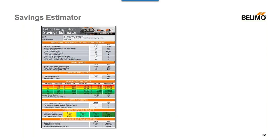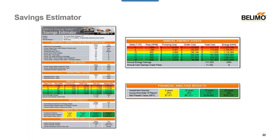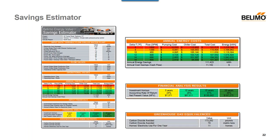One of the additional tools we offer with the energy valve is the savings estimator. You may want to understand what savings you could see before installing an energy valve. You can input your annual energy cost, the configuration of your chilled water plant, number of chillers, chiller efficiency, and overall project cost. It will output savings in flow, pumping cost savings, chiller cost savings, total cost savings, and energy savings in KWH. It will aggregate that financial analysis over a five-year period and also show the amount of CO2 emissions avoided and greenhouse gases avoided.